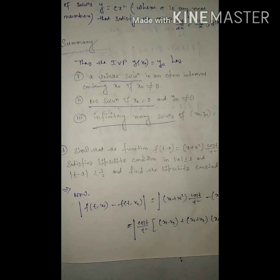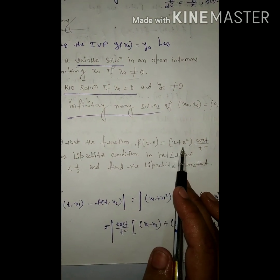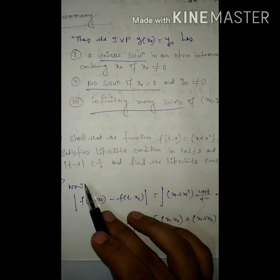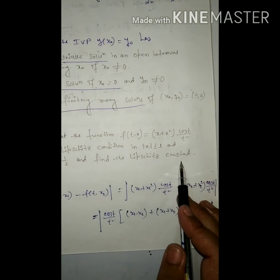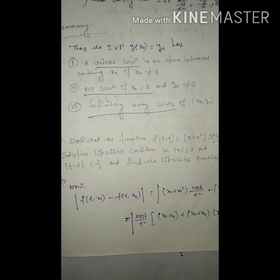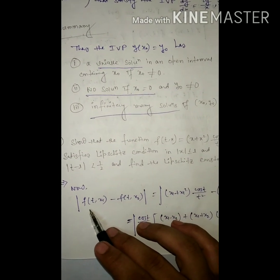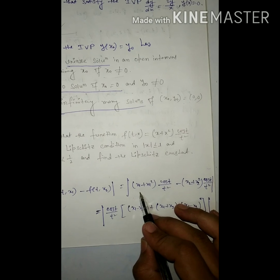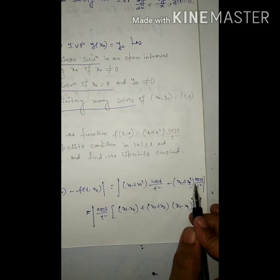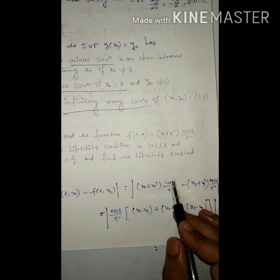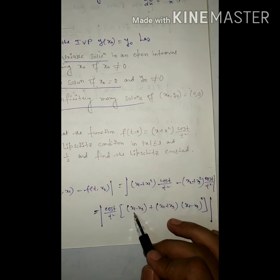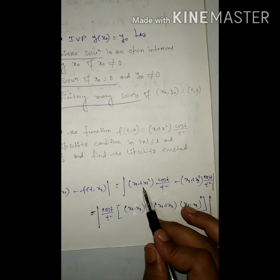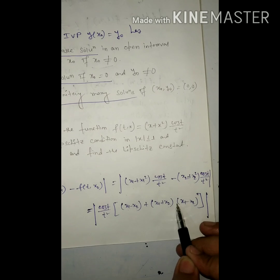Today's third problem: show that the function f(t, x) = x + x²·cos(t)/t² satisfies the Lipschitz condition for mod x ≤ 1 and mod of t minus 1 less than 1/2, and find the Lipschitz constant. Now, mod of f(t, x₁) minus f(t, x₂) equals mod of (x₁ + x₁²·cos(t)/t²) minus (x₂ + x₂²·cos(t)/t²). Taking cos(t)/t² as common, this becomes (x₁ - x₂) + (x₁² - x₂²), which equals (x₁ - x₂)(1 + x₁ + x₂).